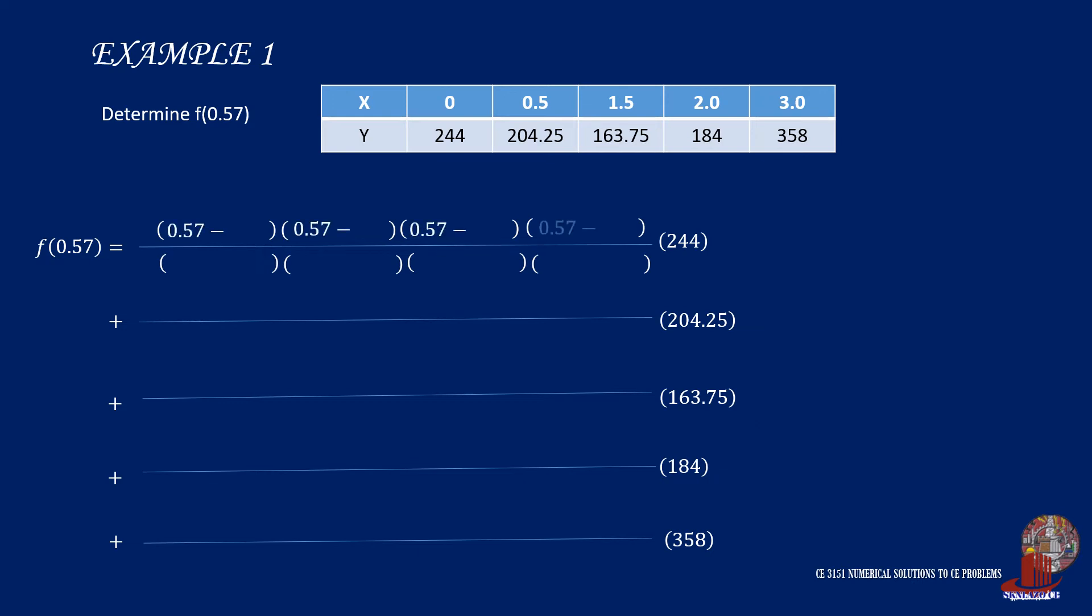The x of the required is placed in the numerator, and that is 0.57. By focusing on the first coordinate pair, we use x1 or 0 in the denominator, and the rest of the x coordinates as subtrahends.